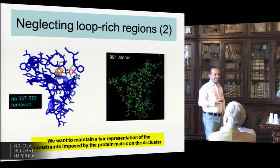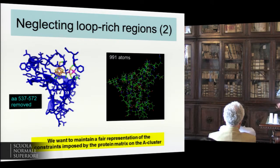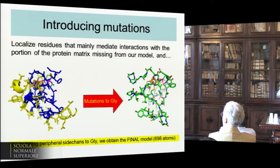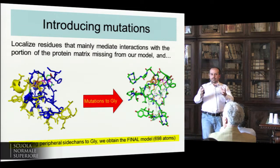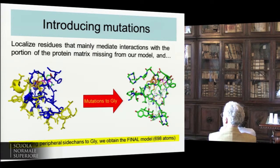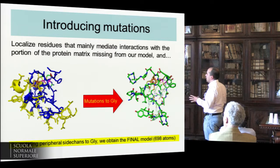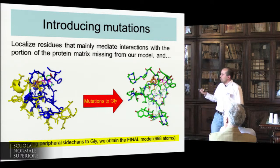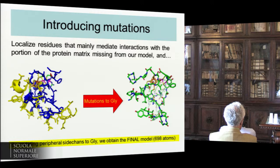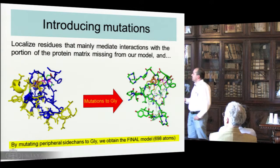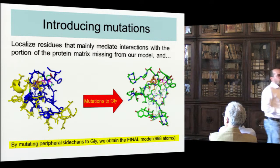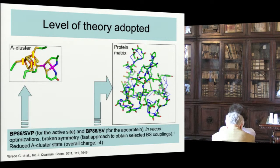At this point we get to the heart of the protein, and this would be a 990-atom model. We decided to make some further simplification: we consider that after cutting in this way, we don't have the rest of the protein matrix, so it's not necessary to keep all the residues at the peripheral area as they are. For example, why keep a tryptophan when it no longer needs to make the hydrophobic interactions used to fold the protein properly? So we mutated all the yellow peripheral residues to glycine, arriving at a final model of 700 atoms, which can be treated at the DFT level.